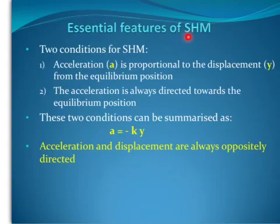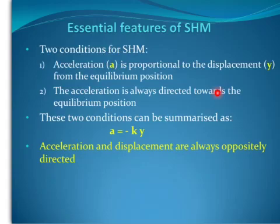Essential features of simple harmonic motion — two conditions. First, the acceleration of the object is proportional to its displacement from the equilibrium position. The further away the object is from equilibrium, the greater its acceleration. Second, the acceleration is always directed towards the equilibrium position. These two conditions can be summarised as a = -ky, where a is the acceleration and y is the displacement. Acceleration and displacement are always oppositely directed — that's why there is a minus sign.